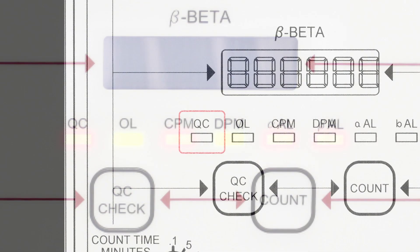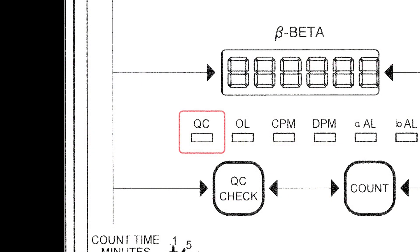These consist of a QC light which is a red LED indicator that illuminates whenever a QC check is needed. After a QC check is performed and passed, the QC indicator turns off.